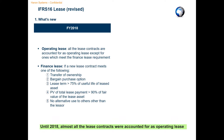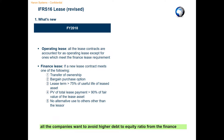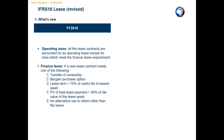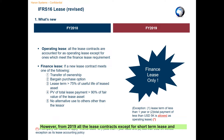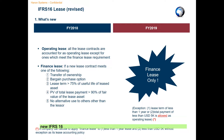Until 2018, almost all the lease contracts were accounted for as operating lease because it is very difficult to meet the conditions for finance lease, or all the companies want to avoid higher debt-to-equity ratio from the finance lease accounting. However, from 2019, all the lease contracts except for short-term lease and small lease should be accounted for as finance lease under the new IFRS 16.